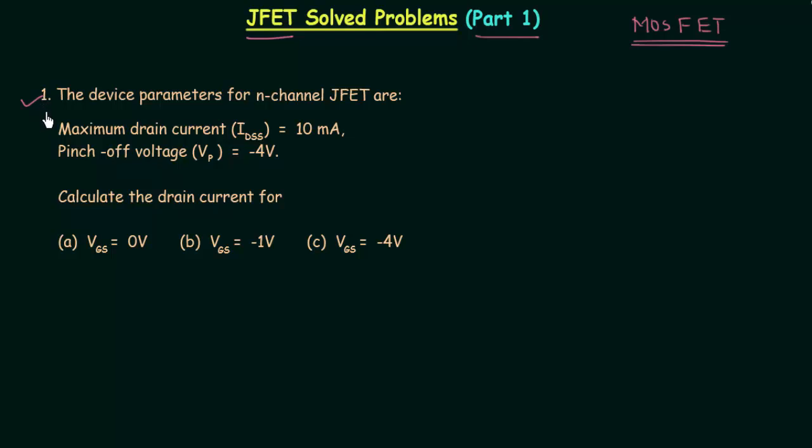In problem number 1, the device parameters for n-channel JFET are: maximum drain current IDSS is equal to 10 mA, pinch-off voltage VP is equal to -4V. For these parameters, we have to calculate the drain current. The drain current is the output current, and there are three cases.